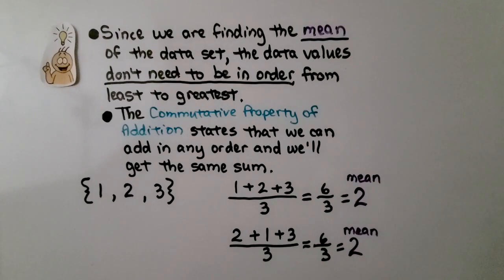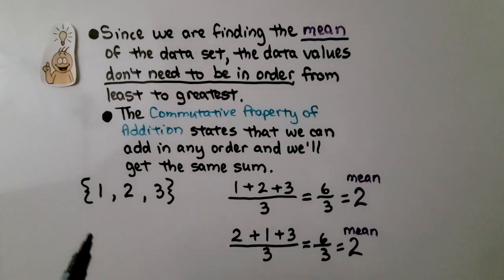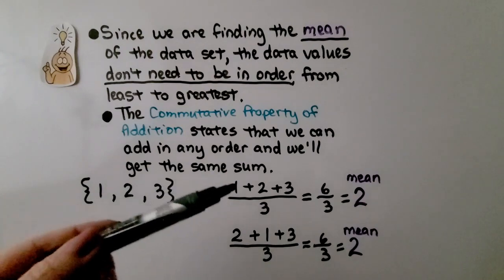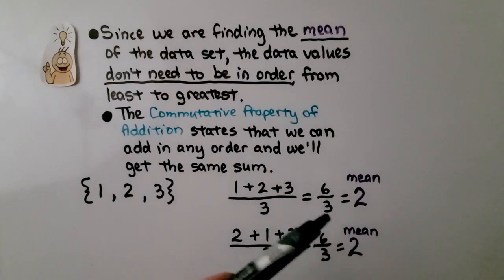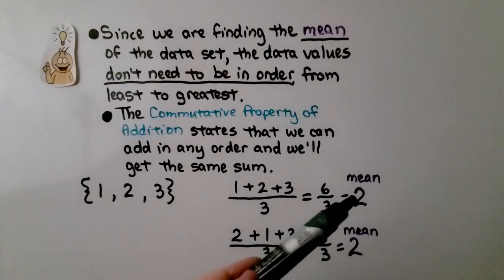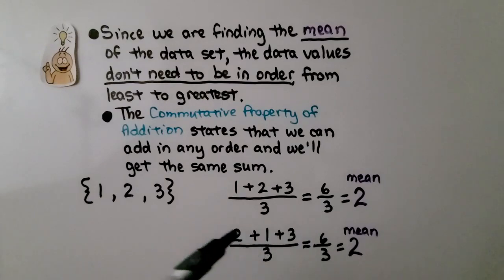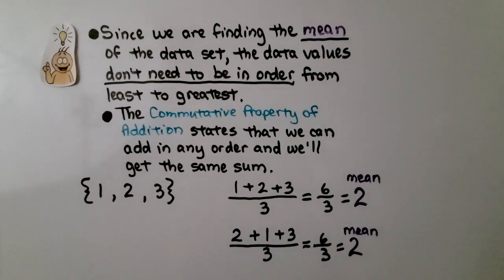Since we are finding the mean of the data set, the data values don't need to be in order from least to greatest. The commutative property of addition states that we can add in any order and we'll get the same sum. If our data values are 1, 2, 3 — to find the mean we add: 1 plus 2 plus 3 equals 6, divide by 3, and get 2. If they were in a different order, we'd still get 6 divided by 3, and our mean would still be 2. We don't need to put the data values in order from least to greatest when finding the mean.